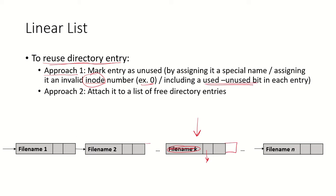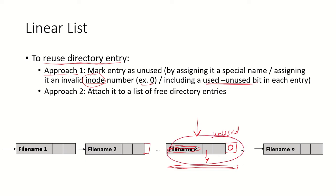Alternatively, we can use a bit to specify whether the entry is used or unused — if it is zero, the entry is marked as unused, and any new file can be placed in that directory entry. Approach two is to add the released space to a list of free directory entries, and whenever a new file comes in, this space can be assigned to it.